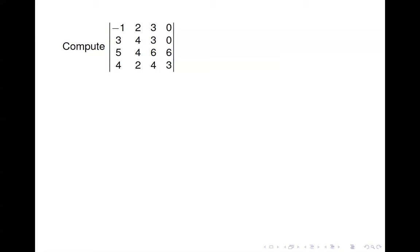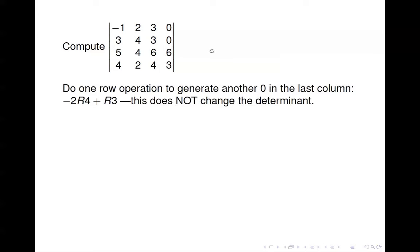Here's an example of using these ideas to compute a determinant. If we did cofactor expansion straight away, we'd expand about the fourth column. But notice we can do one row operation to generate an additional zero in that column, cutting our work roughly in half — from two 3x3 determinants down to one. So we do negative two times row four plus row three, which, recall, does not change the determinant.